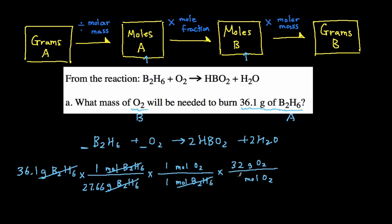And that's going to cause the moles of O2 to cancel each other out, and we're left with grams of O2. And we plug this into our calculator, and we get a final answer of 41.76 grams of O2.